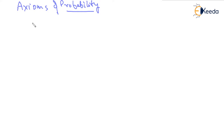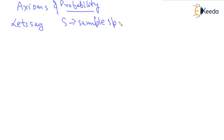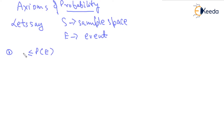Let's start. Let's say that S is the sample space and E is the event. Then, the probability of an event is greater than or equal to 0 and less than or equal to 1. If we are talking in percentage, it is going to be between 0 to 100%.